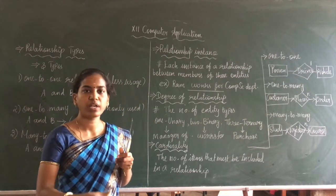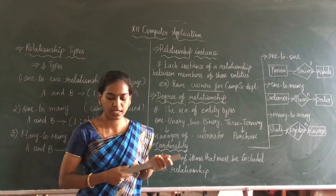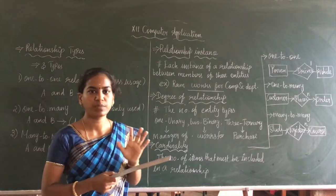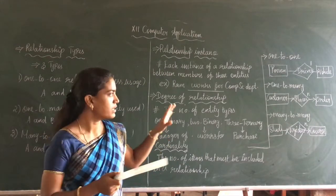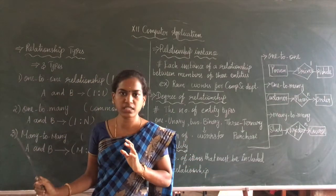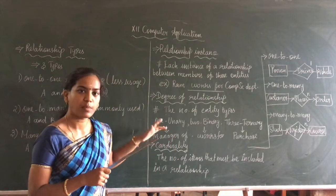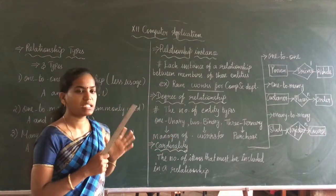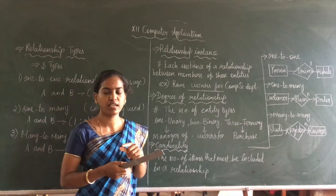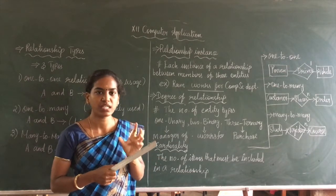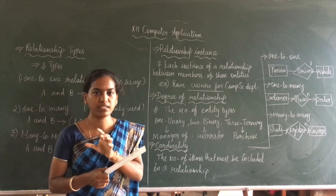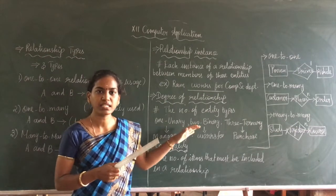There are three more subtopics available in relationship types. These are the subtopics under the relationship type model. First one is relationship instance. What does relationship instance mean? We have already studied entity instance — for example, the entity 'animals' has instances like dog and cat. Similarly, a relationship also has instances.